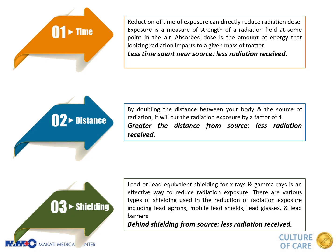Let's talk about time, distance, and shielding one by one. For time, the less time spent near a radioactive source, the less radiation you receive. For distance, the greater the distance from the source, the less radiation you receive. For shielding, being behind or using appropriate shielding material from the source means the less radiation you will receive — take note of the term 'appropriate shielding material.'